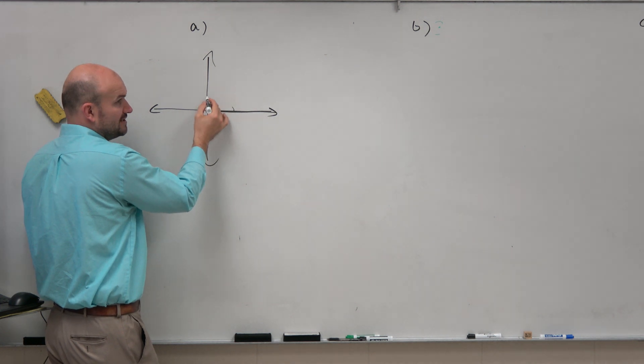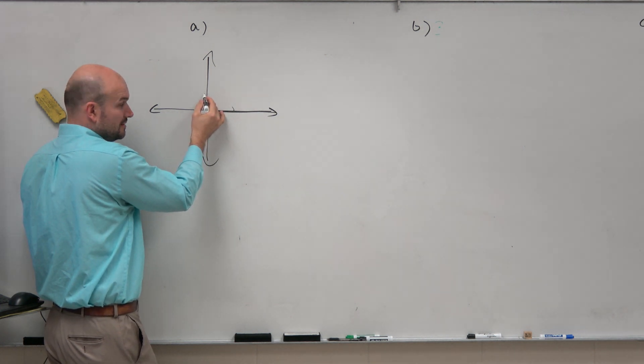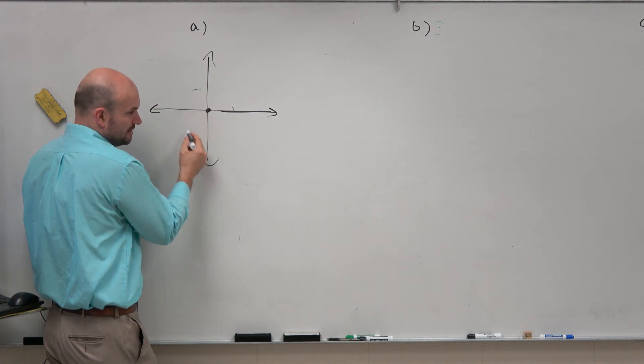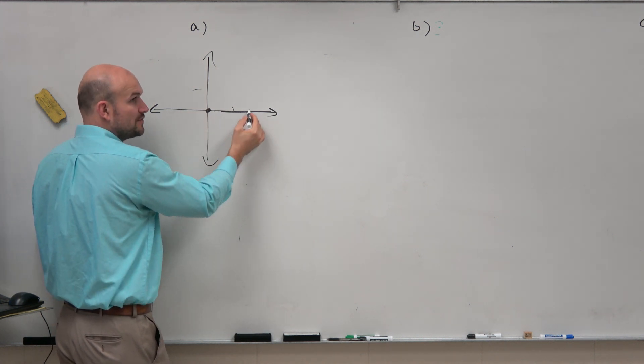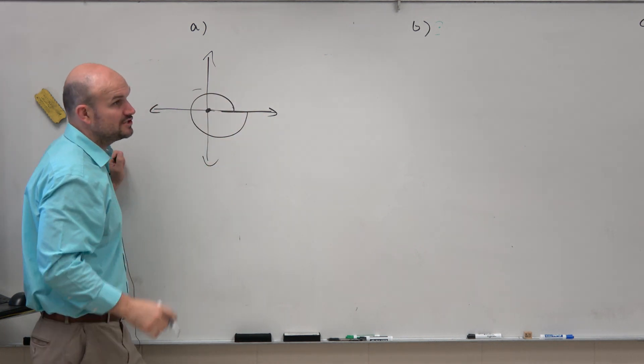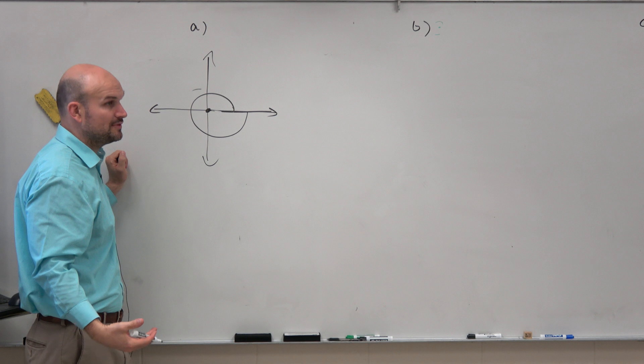So we know from here to here is 90 degrees, right? Straight angle from here to here is 180, and just keep adding 90s. This will be 270, all the way around is 360. So we went all the way around here, and then over at 360...